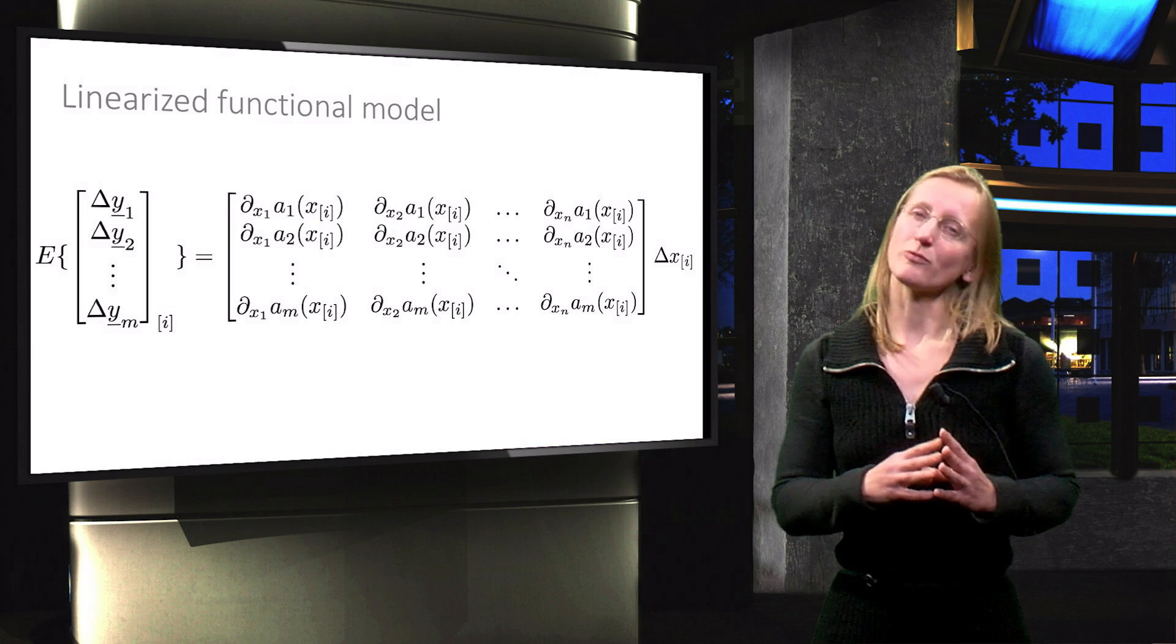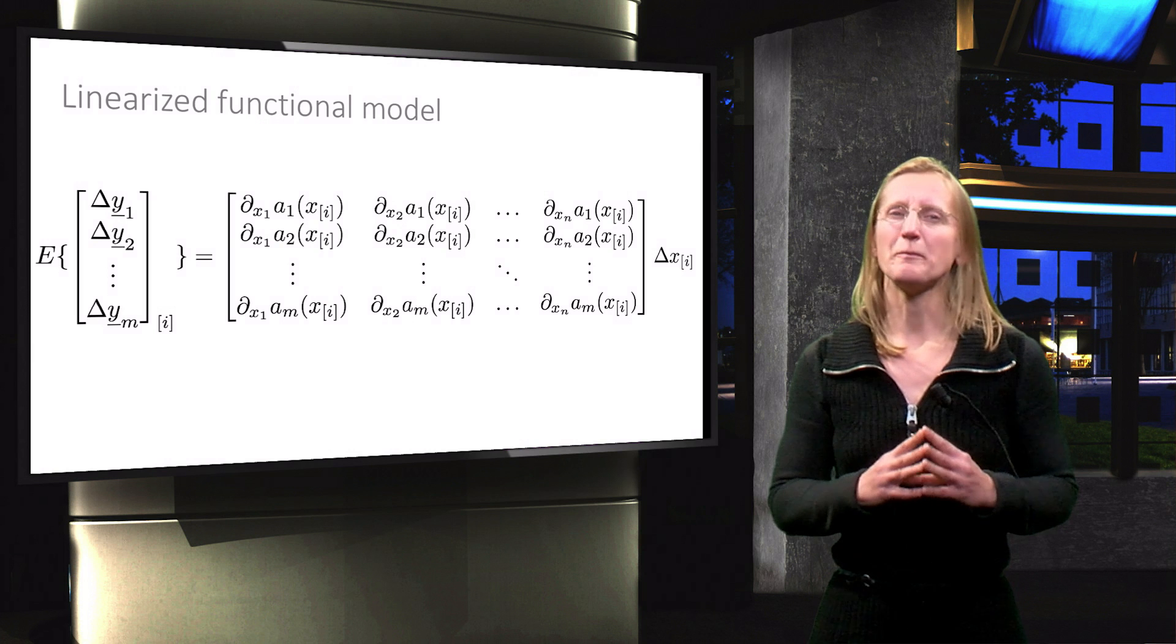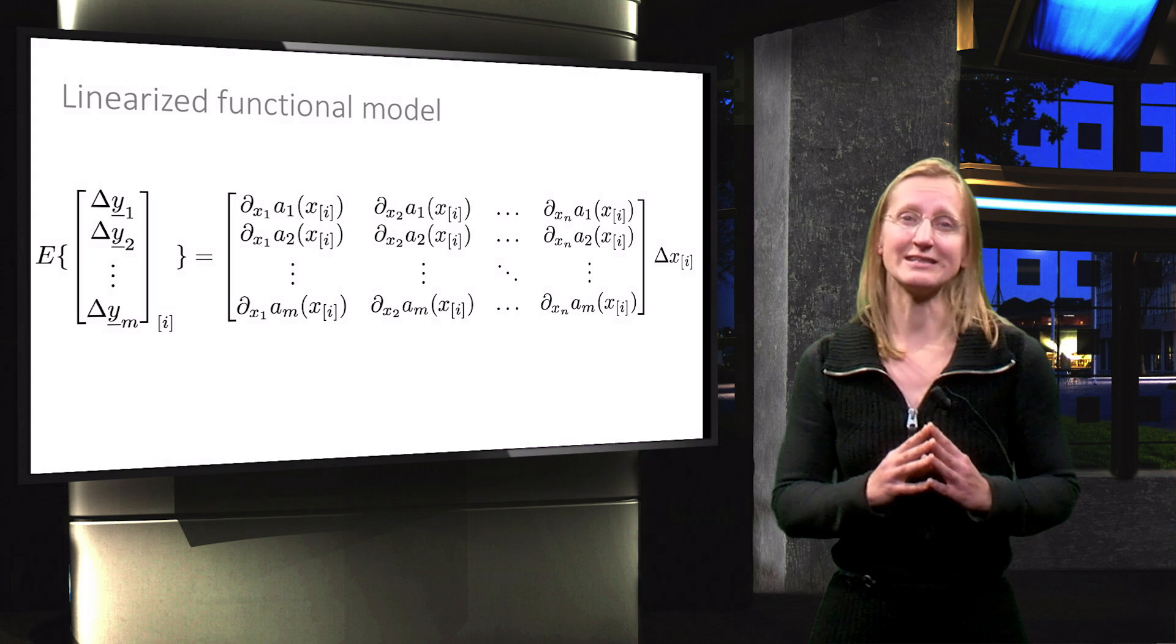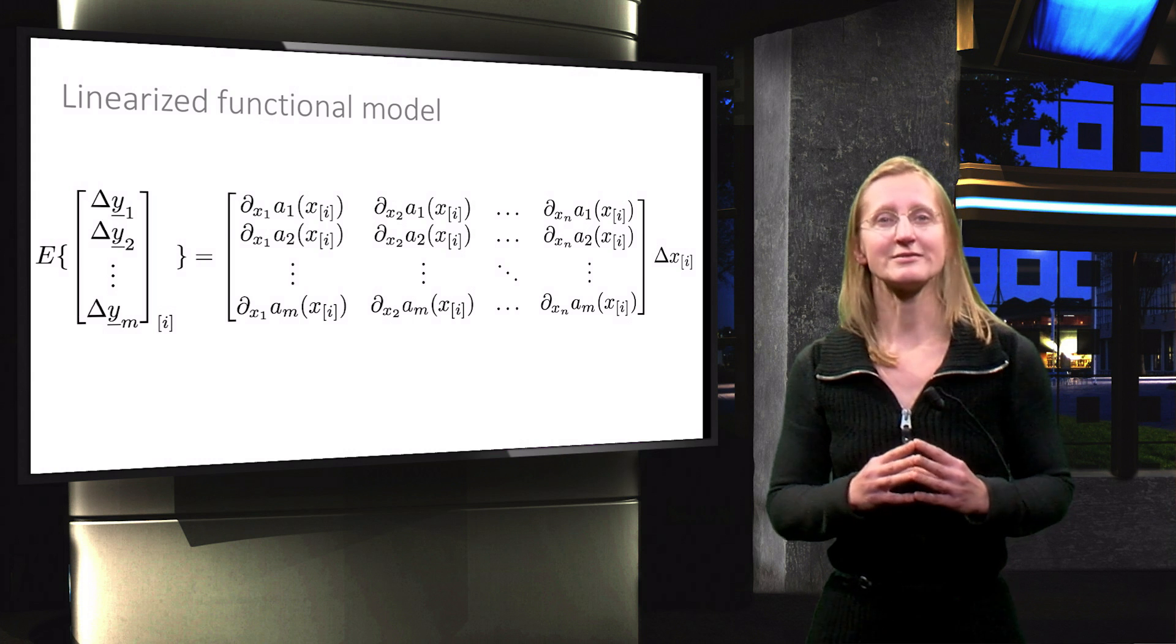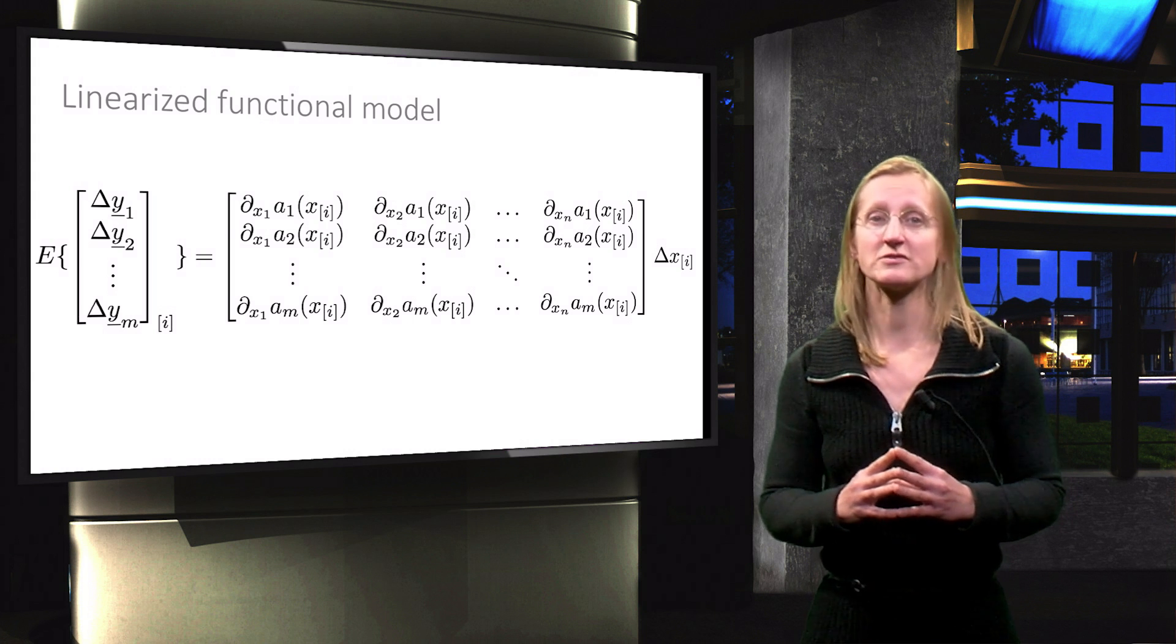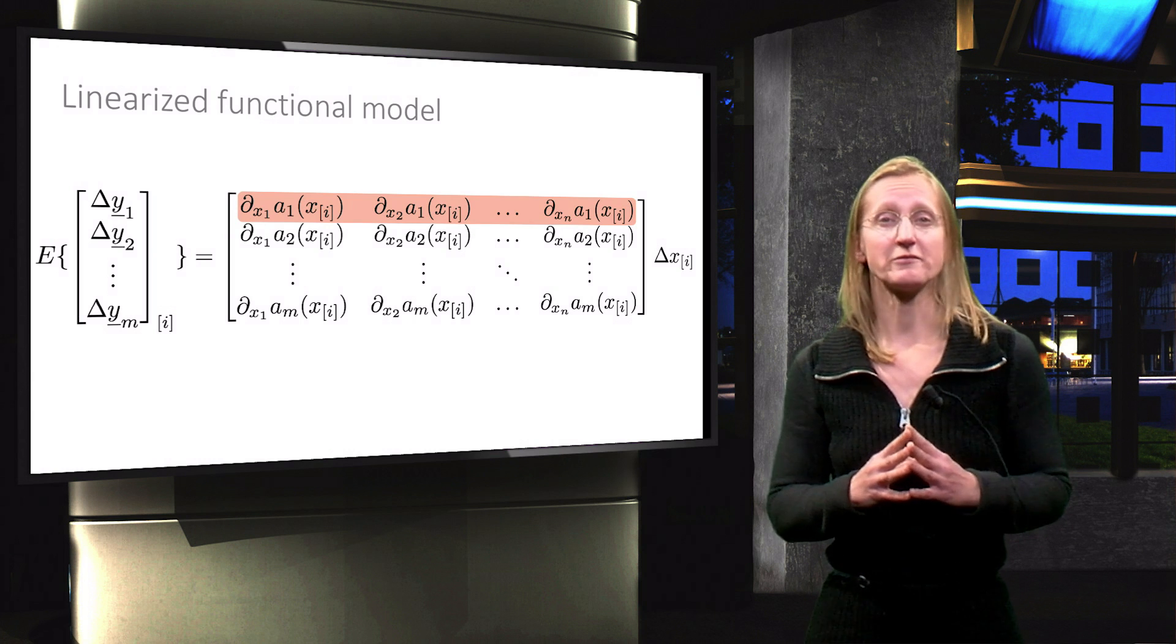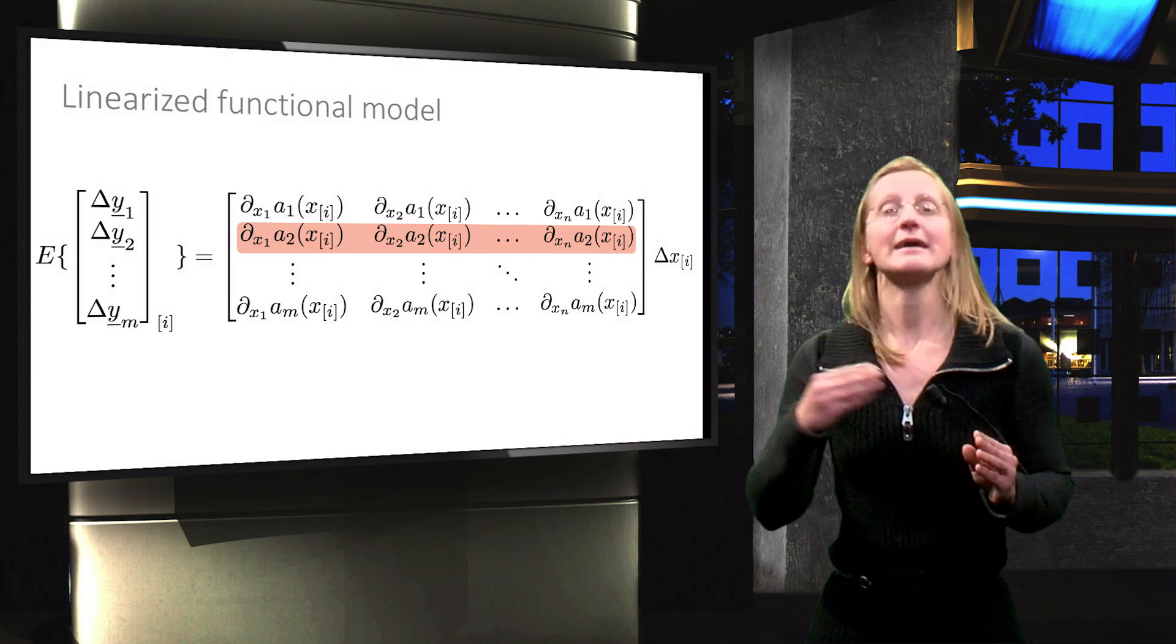The matrix on the right hand side of this equation may look impressive, but if you take a closer look you can see that for instance the first row contains the n partial derivatives of function a1, the second row the partial derivatives of function a2, etc.